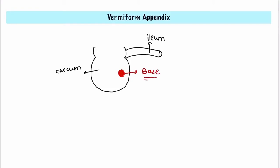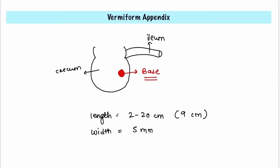This will be the base of the appendix. The base of the appendix remains fixed but the tip can project in any direction. The probable positions of the appendix is the most important question for your university exam. Let's discuss the dimensions of the appendix. The length is 2 to 20 cm, with 9 cm on average. The width or diameter is 5 mm, so the lumen is very narrow and it often gets obliterated during mid-adult life. The appendix in children is longer than in adults.